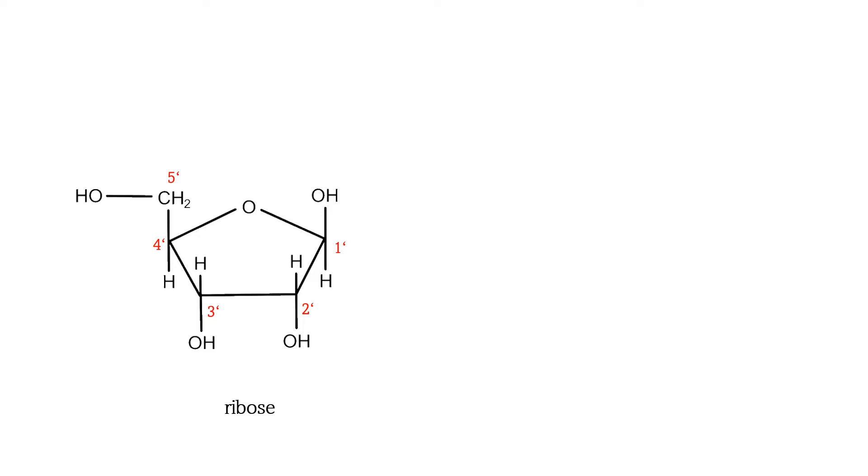The difference between 2-deoxyribose found in DNA and ribose is that ribose has a hydroxyl group on its 2-prime carbon, whereas deoxyribose contains a hydrogen atom.